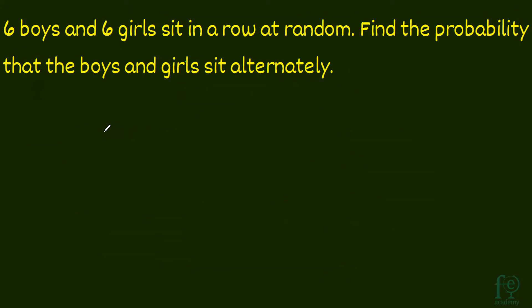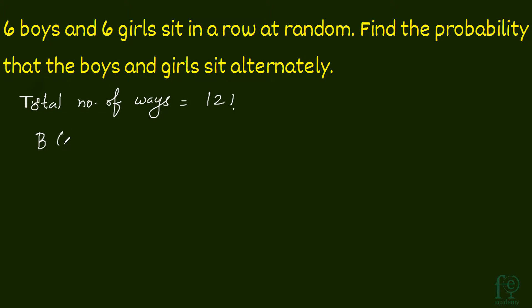Third question: 6 boys and 6 girls sit in a row at random. Find the probability that the boys and girls sit alternately. The total number of ways is again 12 factorial. For the alternating arrangement, it should go: boy, girl, boy, girl, boy, girl... through all 12 positions.